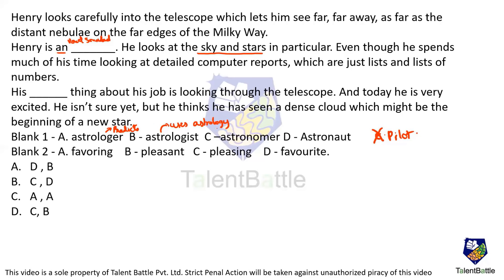Option C — astronomer — is actually a scientist in the field of astronomy who focuses on specific questions outside the scope of earth, observing astronomical objects like stars, planets, moons, and comets. In simple terms, an astronomer is a person who observes earth, planets, stars, the sun, etc. I can consider this option because Henry looks particularly towards the sky and stars.